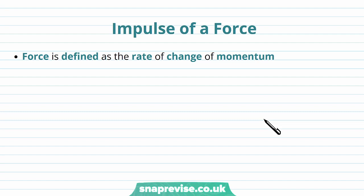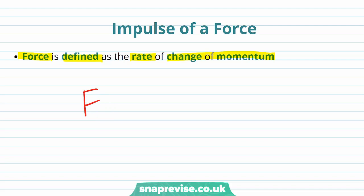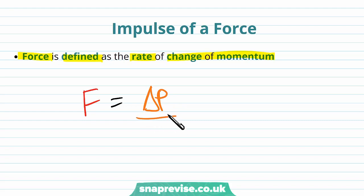First of all, we need to define the impulse of a force and understand what it is. We've seen previously that force is defined as the rate of change of momentum. So we can write it as an equation: force is equal to the change in momentum, delta p, divided by the time taken for this change, t.